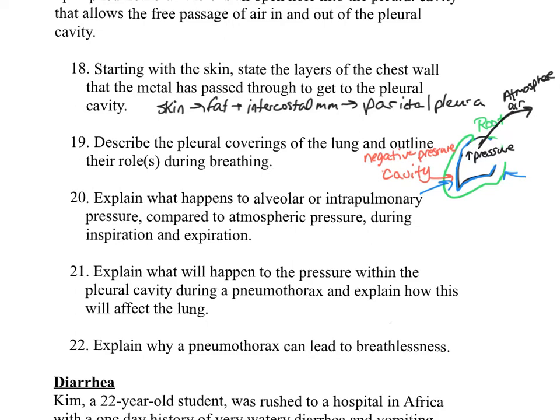During forced expiration, additional muscle contraction causes a rapid decrease in intrathoracic volume and a rapid rise in alveolar pressure, which leads to a fast expiration of air from the lungs.